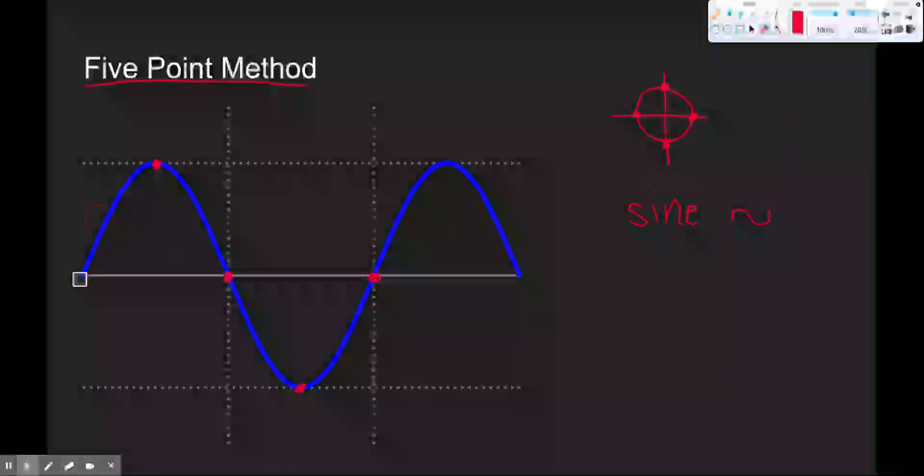Now, I could just as easily have picked a different place to start. I can really pick any place to start, but again, I want to start at the top, the bottom, or the middle. The maximum, the minimum, or the middle. And that goes back to my unit circle, where I'm either starting at the highest value, the lowest value, or the middle values.